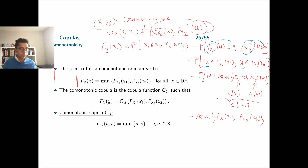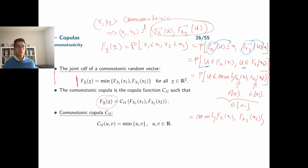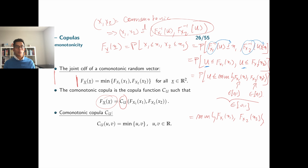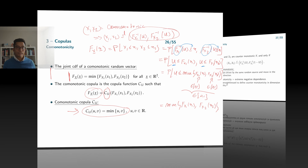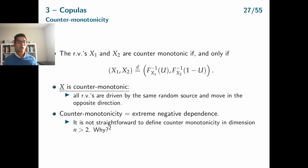We have shown that the joint CDF of a comonotonic random vector equals min(F_x1(x1), F_x2(x2)). Using Sklar's theorem, we find that the comonotonic copula C_U is the unique copula for this joint CDF, given by C_U(u1, u2) = min(u1, u2).